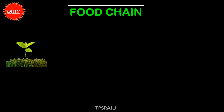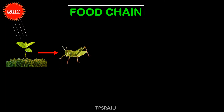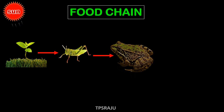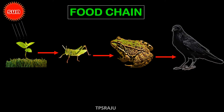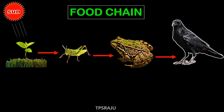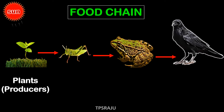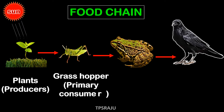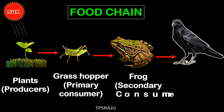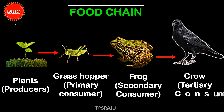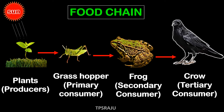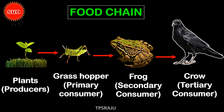Let's see another example from our surroundings. Plants, or producers, prepare their own food. Grass is eaten by grasshopper. Grasshoppers are eaten by frog. Frogs are eaten by crow. Here, plants are producers, grasshopper is the primary consumer, frog is the secondary consumer, and crow is the tertiary consumer. Likewise, in any ecosystem, there is a chain-like relationship between organisms. This sequence of who eats whom is called a food chain.